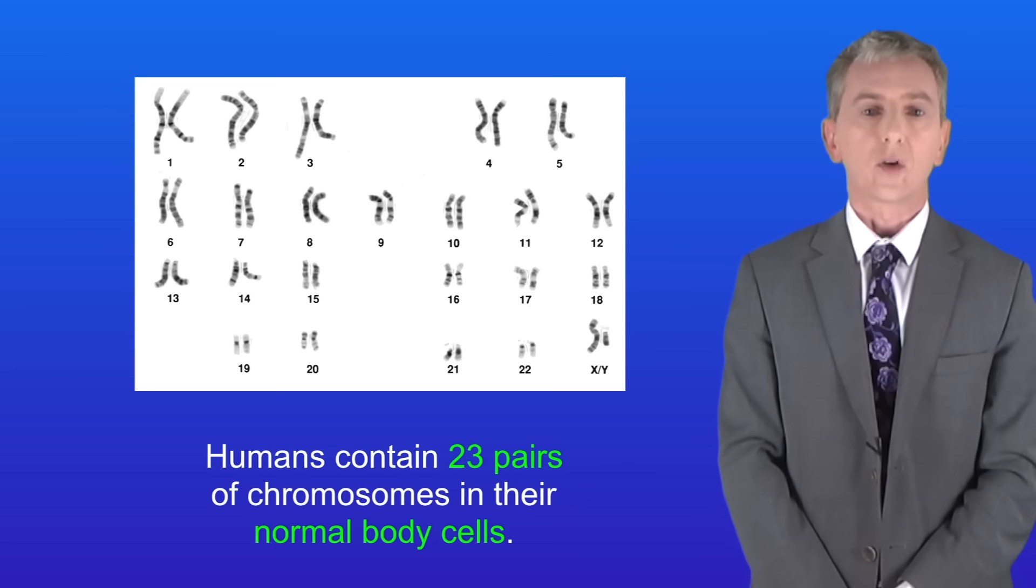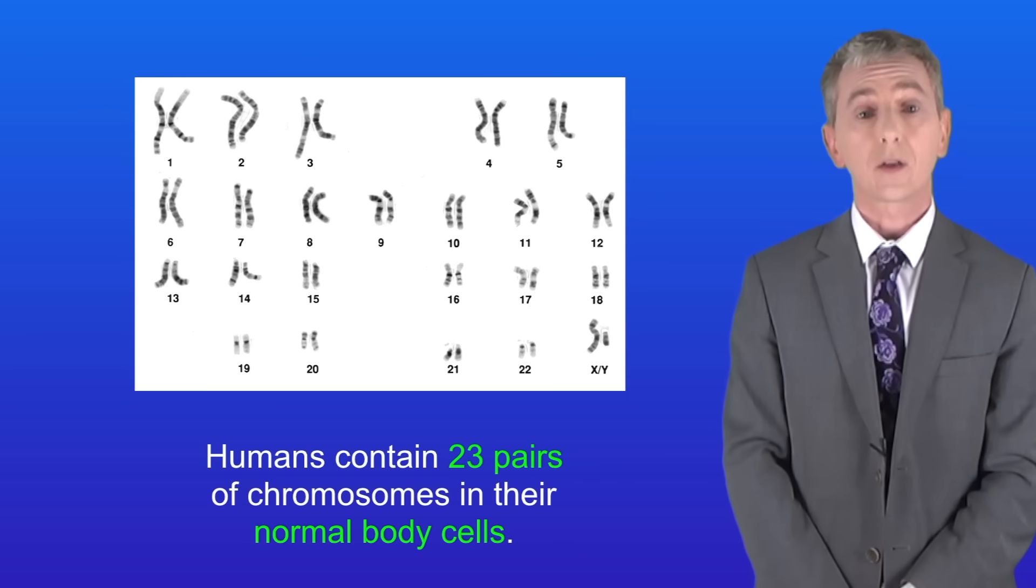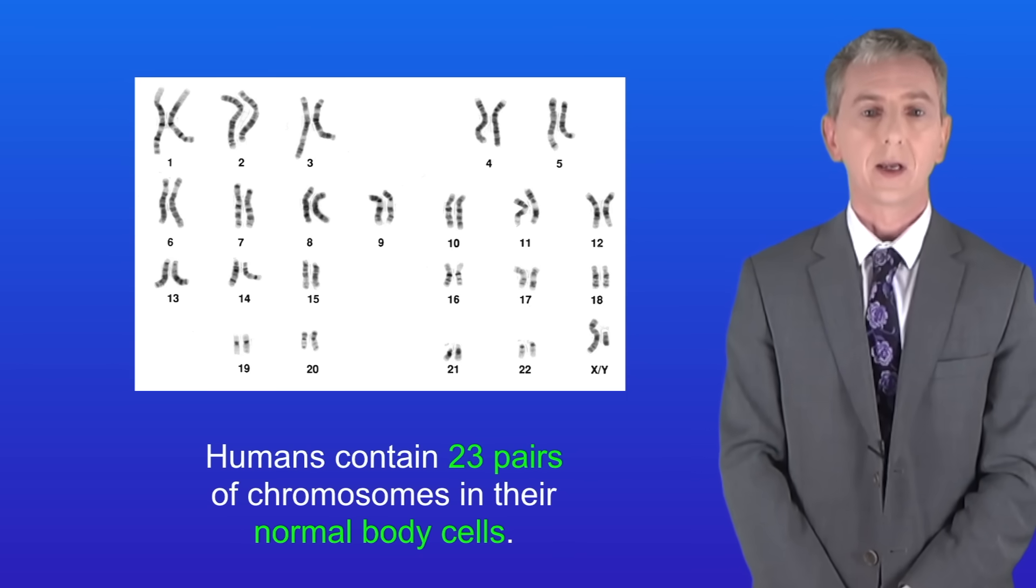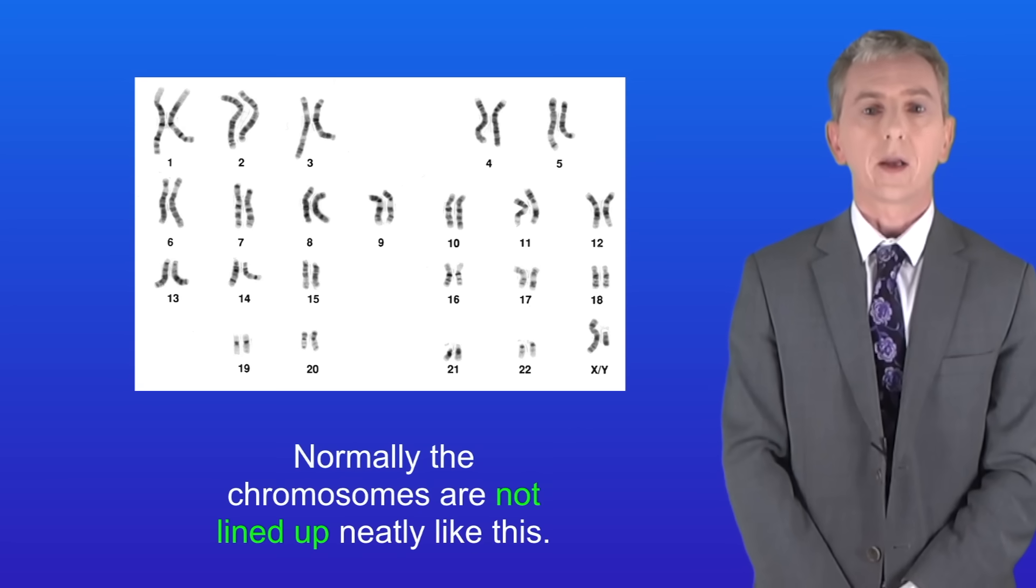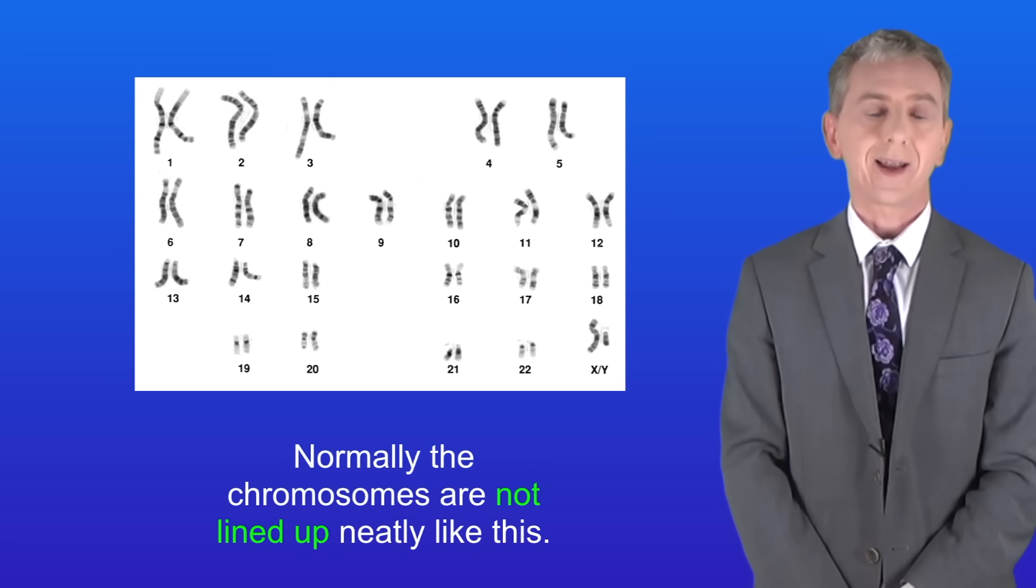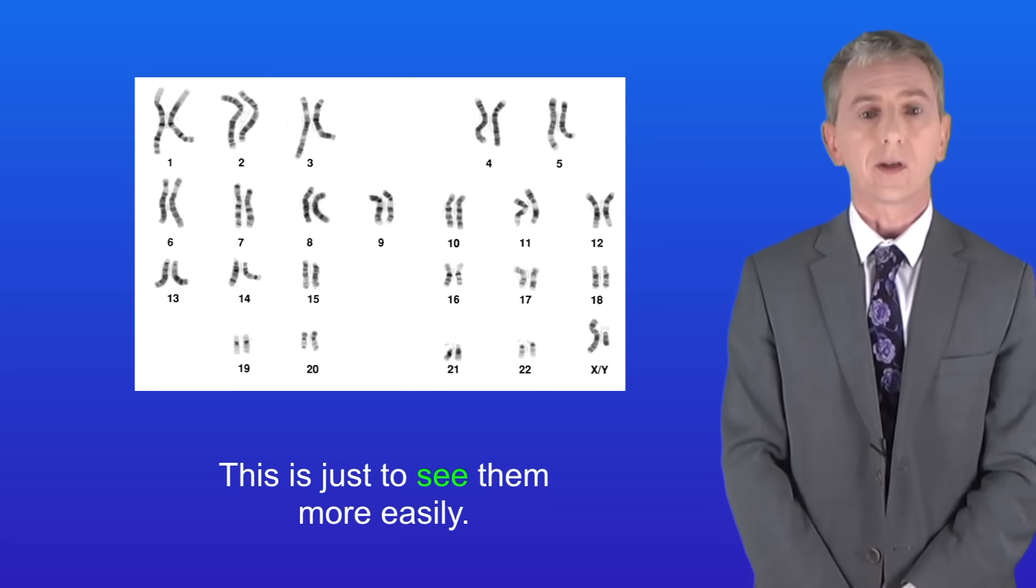In the last few videos we've seen that humans contain 23 pairs of chromosomes in their normal body cells. I'm showing you the human chromosomes here. I should point out that normally the chromosomes are not lined up neatly like this. This is just to see them more easily.